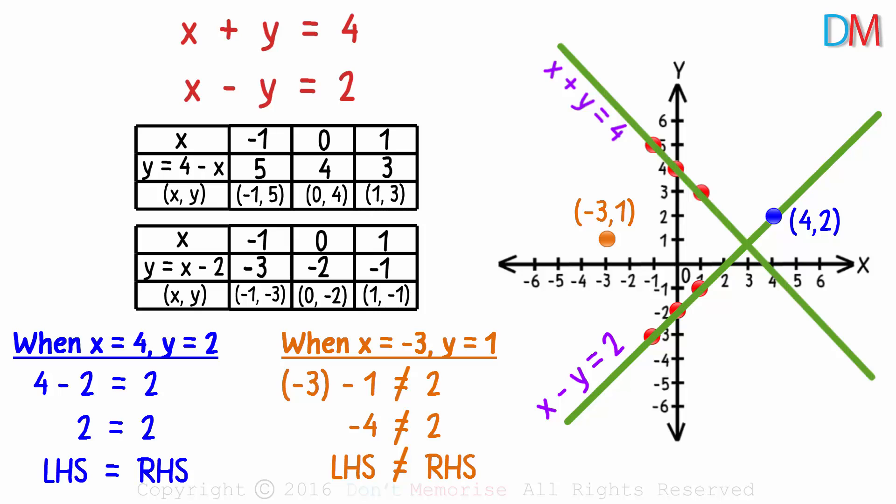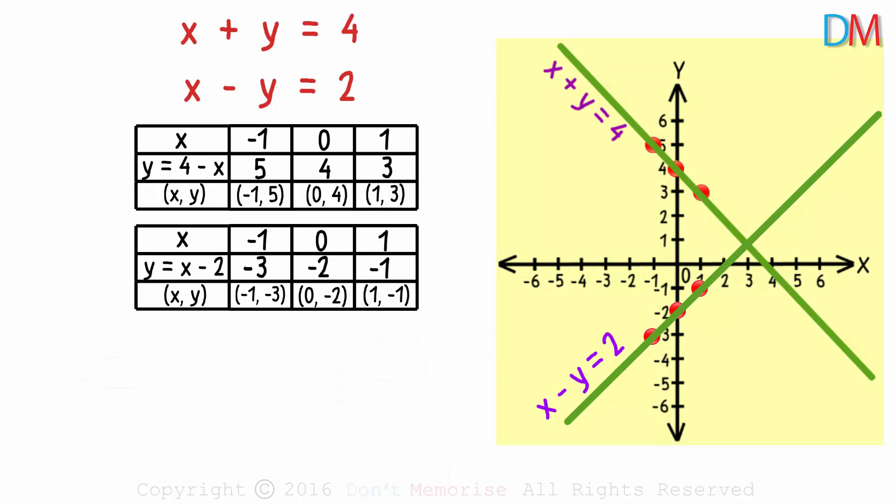Is there anything else you can see in this graph? Anything interesting? Look at the point where both lines intersect. What can you tell me about this point?